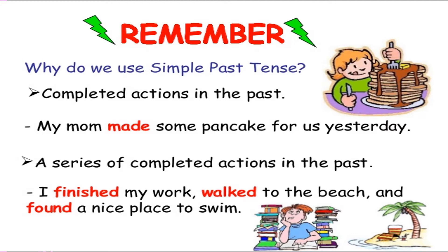For example, 'My mom made some pancakes for us yesterday.' 'Made' means the action is completed in the past. A series of completed actions in the past — for example, 'I woke up in bed and I drank tea and I came to school.' Or 'I finished my work, walked to the beach and found a nice place to swim.' These are examples of simple past. You have to keep in mind: when talking about completed actions in the past, use simple past. A series of completed actions in the past can also use simple past tense.